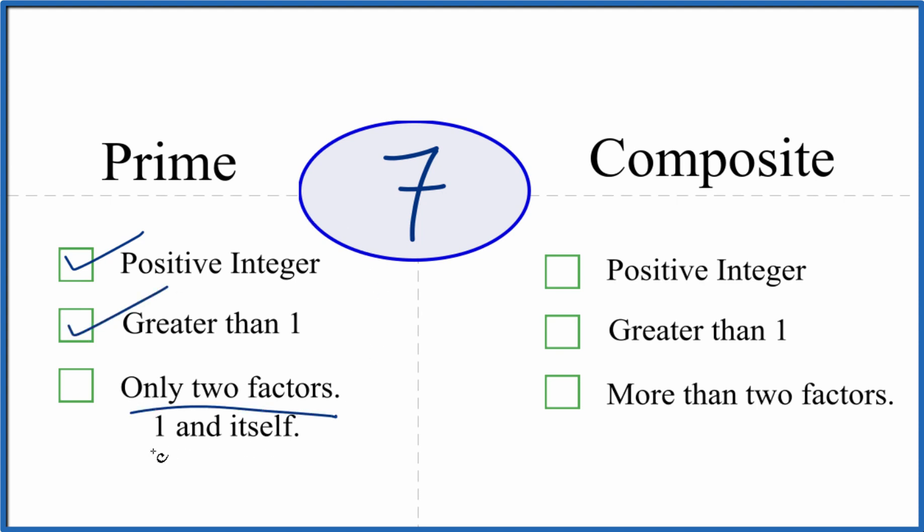And are there only two factors, 1 and 7, that go evenly into 7? We know that 1 times 7 equals 7. So there's 1, 2 factors. But are there any more factors that divide evenly into 7? The answer is no, there are not. There are only two factors. So 7 is a prime number.